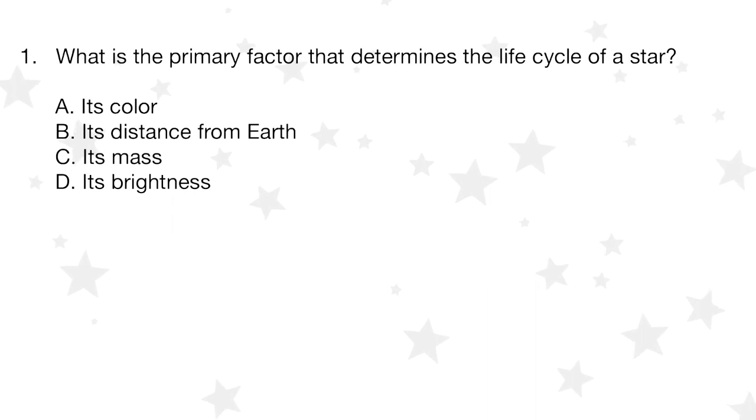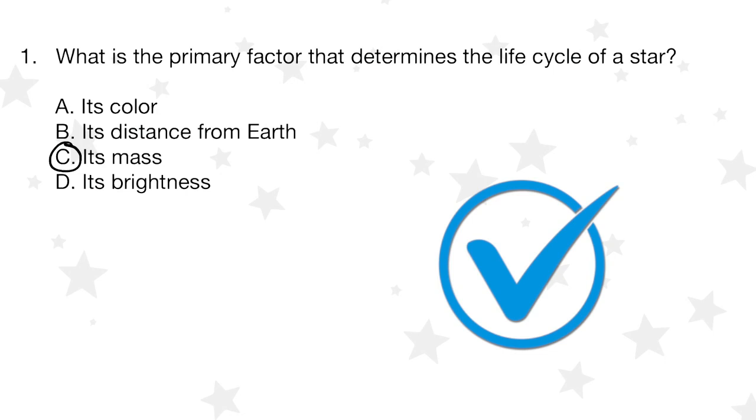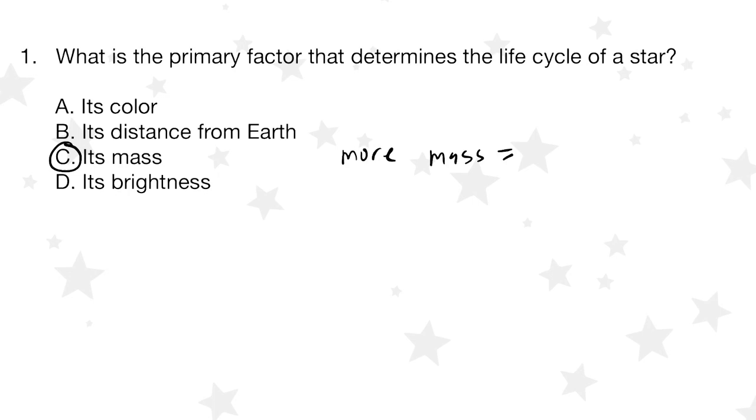Well, the correct answer here is going to be C, its mass. It actually turns out that the more mass a star has, the shorter the life of that star is. And so if we think of what a star is, it's basically a big ball of hydrogen gas and it's undergoing a nuclear reaction.